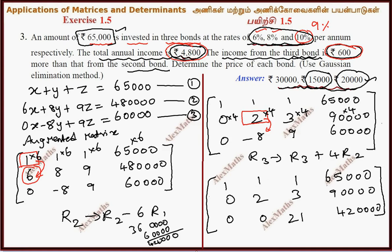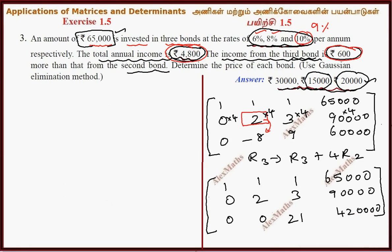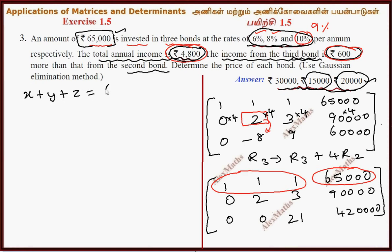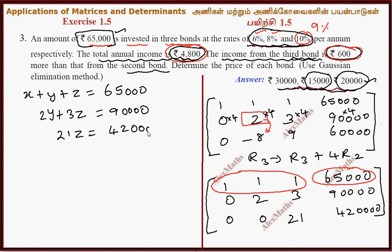Now we write the 3 equations. So: x plus y plus z equals 65,000. 2y plus 3z equals 9 with four zeros — that is 90,000. And 21z equals 42 with four zeros — that is 420,000.